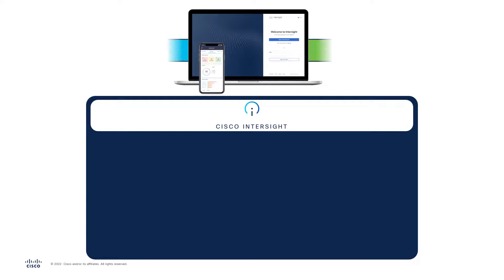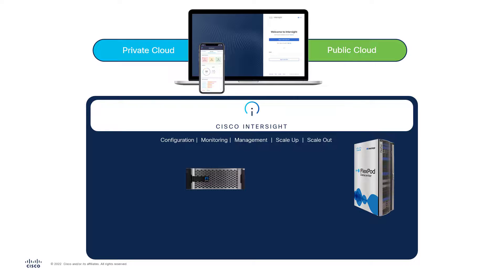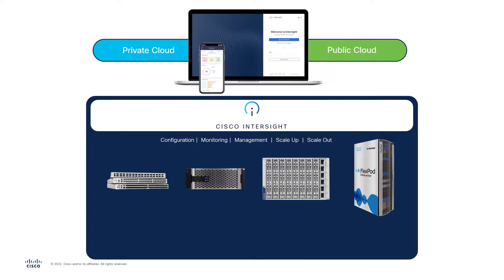Intersight brings different public and private cloud systems together by providing an always-available cloud interface that allows configuration, monitoring, management, and scaling of Cisco and other solutions such as NetApp storage. Intersight integrates NetApp's OnTap software running the FlexPod storage. Intersight allows customers to fully configure the latest Cisco UCS systems through a profile and policy-based configuration similar to UCS Manager, except in a more powerful, globally available, and simpler-to-use format. Finally, Intersight also provides the capability to fully configure and manage the Cisco Nexus network systems through native support for the Nexus dashboard management system.